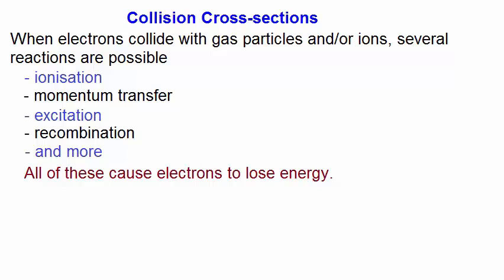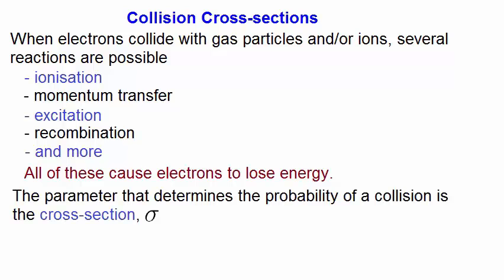No matter which of these you look at, the end result is that the electrons lose energy. But this is a stochastic process, where we are dealing with the probability of a collision taking place. We introduce the idea of cross section, sigma, which has units of area, which is essentially the area available for the electron for a collision to take place.